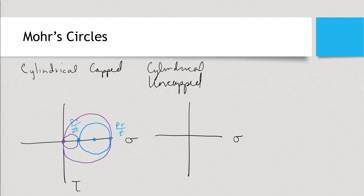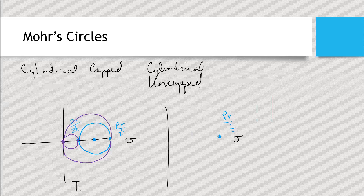For the cylindrical uncapped vessel, which of these two stresses stays the same? PR over T. So this would be PR over T, but now the other one is zero. That gives us a Mohr's circle that looks like this. Now in the plane of that thin shell, you actually get a bigger Mohr's circle — one that matches the biggest Mohr's circle from the cylindrical capped case. If you rotate about the other two axes, they both pass through zero, so one looks identical to what we already have and the other is just a dot at zero.